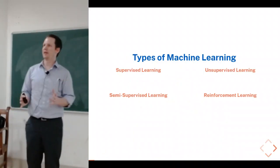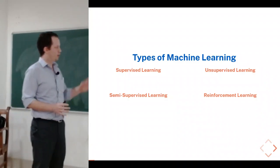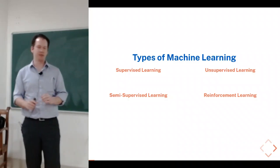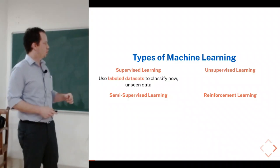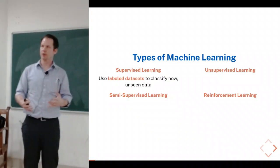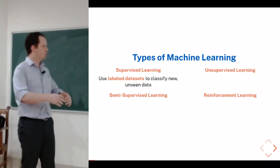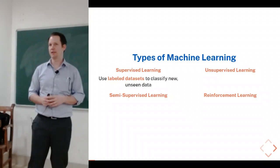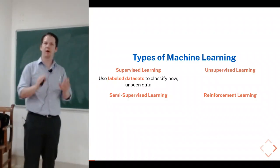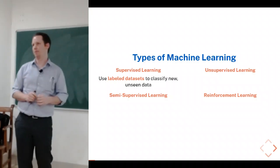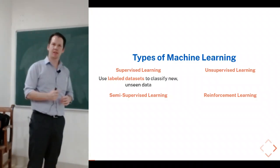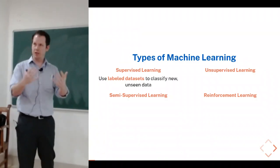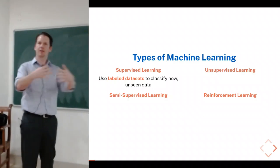There are different ways to carve up the field of machine learning. Most have to do with the type of labels associated with the data. In supervised learning, you use a labeled dataset and use the features you collect to classify new or unseen data. For example, I want to build a model predicting whether patients have tumor type A or tumor type B. I collect labeled data where I know the tumor type, collect features, and build a model.